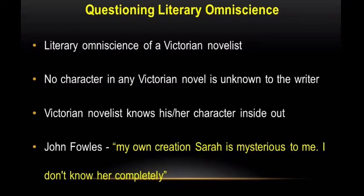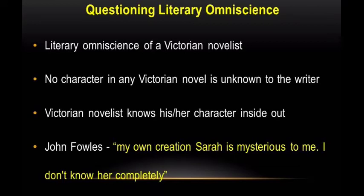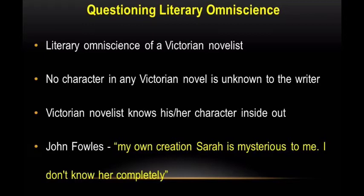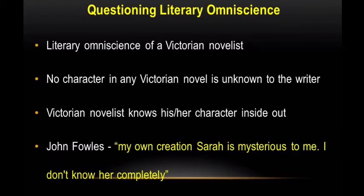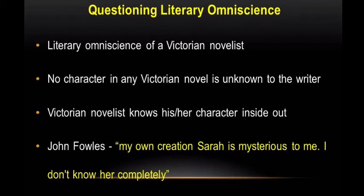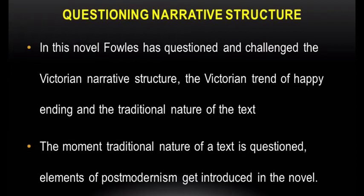A Victorian novelist claims to have written his or her novel from a throne of literary omniscience — no character in any Victorian novel is unknown to the writer. Victorian authorship claims to have known its characters inside out. But this omniscient authorship is questioned by John Fowles, who has said: 'My own creation Sarah is mysterious to me. I don't know her completely.' In this novel, Fowles has questioned and challenged the Victorian narrative structure, the trend of happy ending, and the traditional nature of the text.